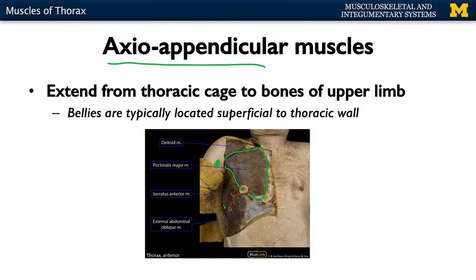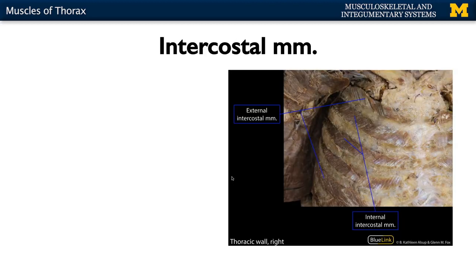The serratus anterior is another example of a superficial thoracic muscle. We'll discuss these muscles more when we cover the upper limb. The main muscles of the thorax, though, are the intercostal muscles.